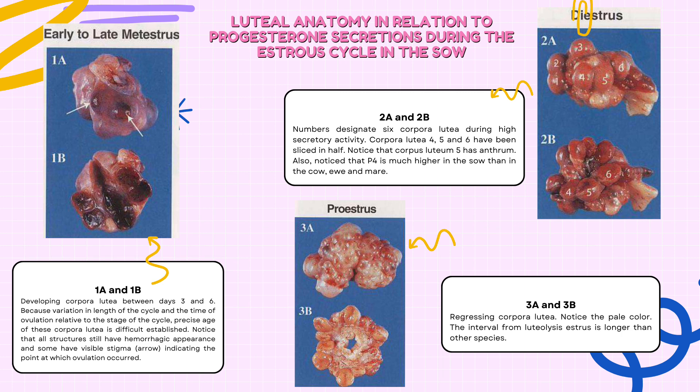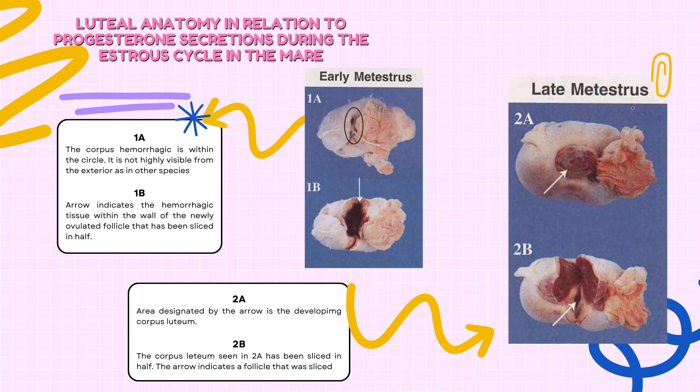Notice that P4 is much higher in the sow than in the cow, ewe, and mare. For proestrus, it shows regressing corpora lutea. Notice the pale color. The interval from luteolysis to estrus is longer than in other species. For early metestrus, 1A shows the corpus hemorrhagicum within the circle. It is not highly visible from the exterior as in other species. In 1B, the arrow indicates the hemorrhagic tissue within the wall of the newly ovulated follicle that has been sliced in half.